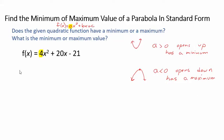For this particular value, our a value is four and our a value is greater than zero. So that means our parabola opens up and has a minimum. Now what is that minimum value?